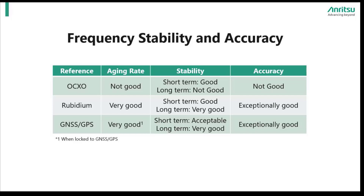We start with the OCXO, which has a poor aging rate and likewise poor long-term stability and accuracy. For some applications this performance may be enough, but for critical applications these qualities may be inappropriate.